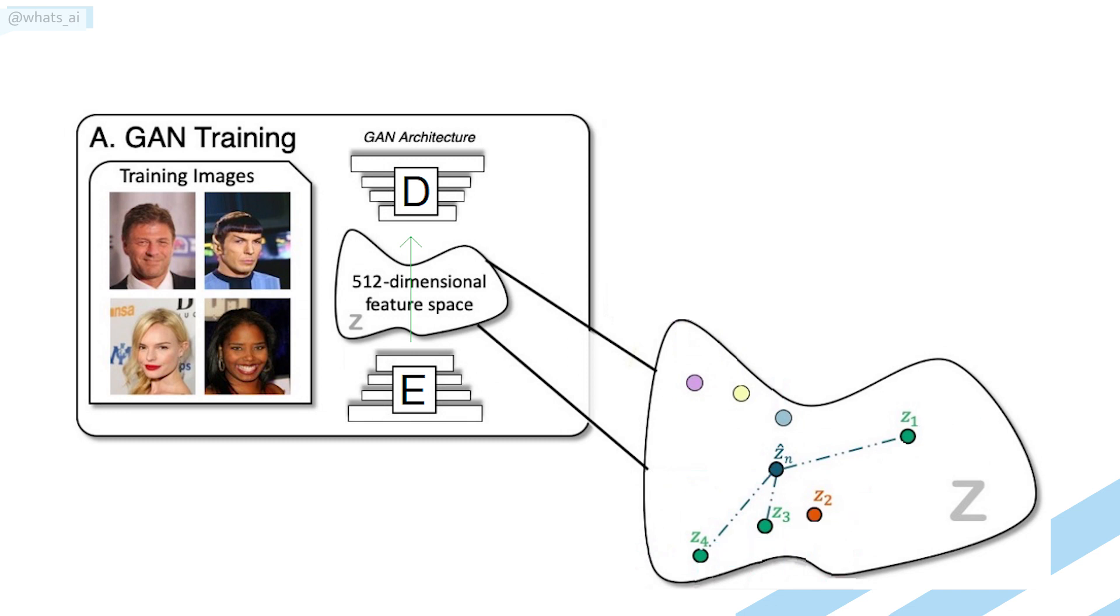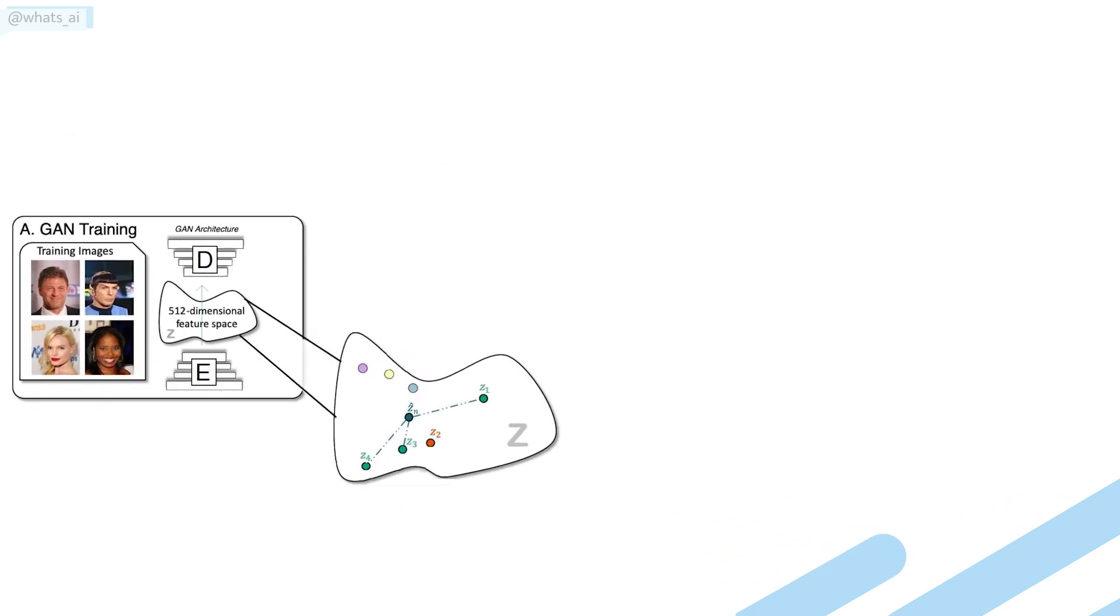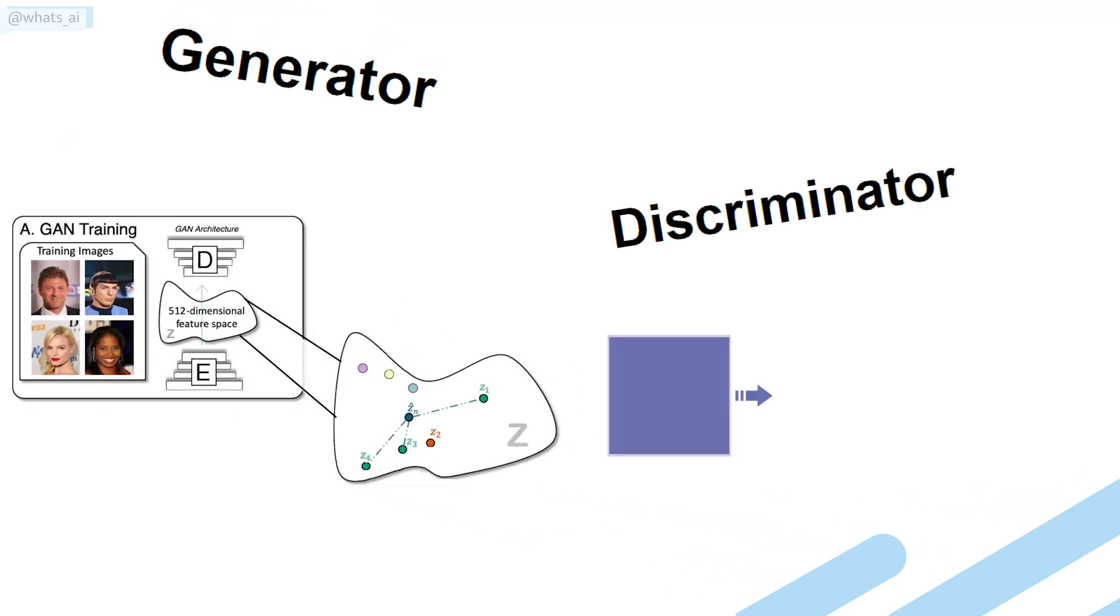This powerful architecture basically takes a bunch of images and tries to imitate them. There are typically two networks, the Generator and the Discriminator. Their names are pretty informative.